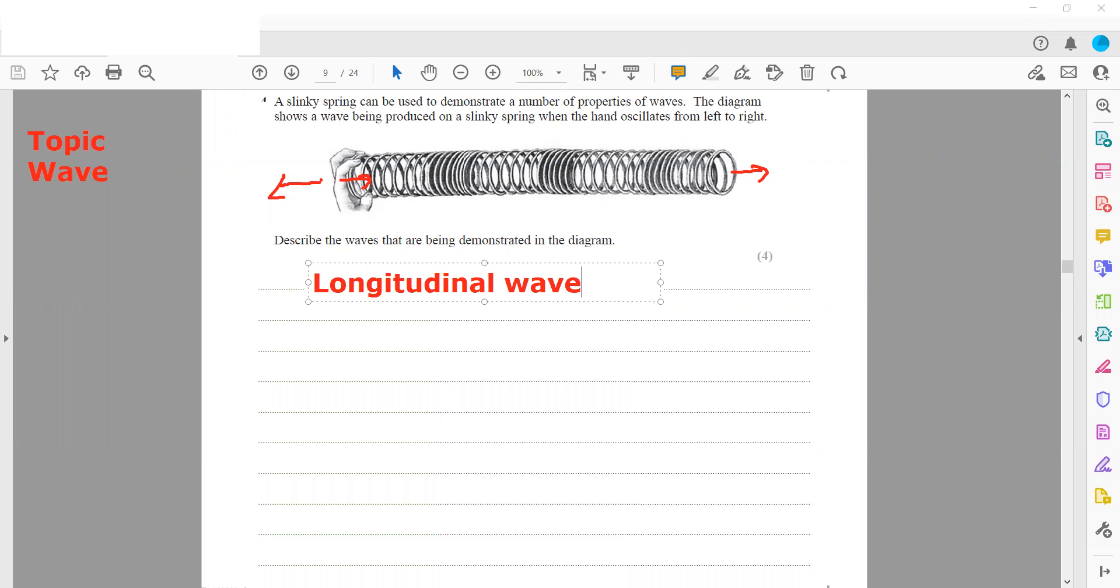The wave we are observing is a longitudinal wave. Longitudinal waves propagate or travel in the form of compressions and rarefactions.